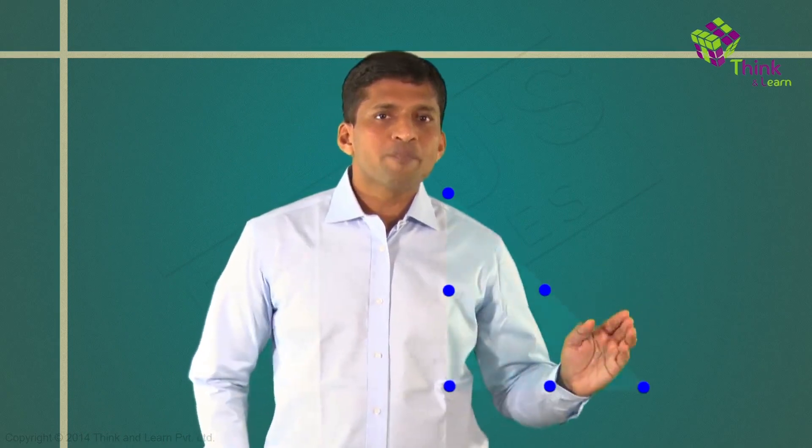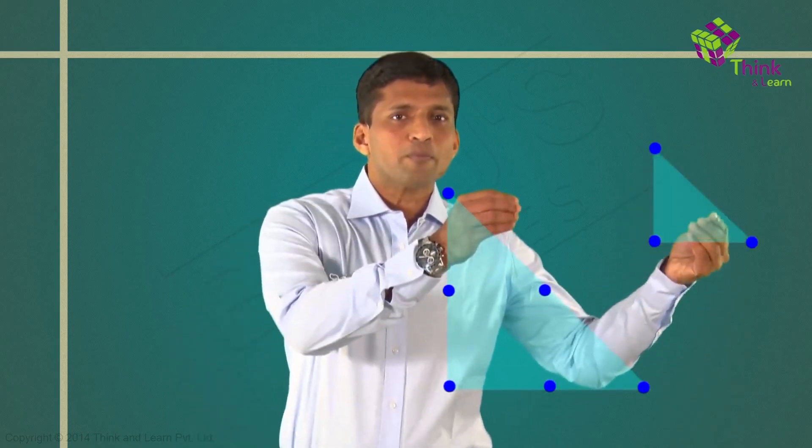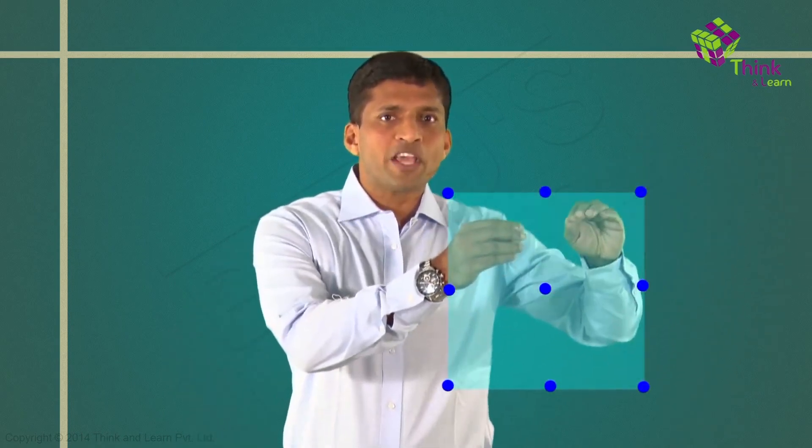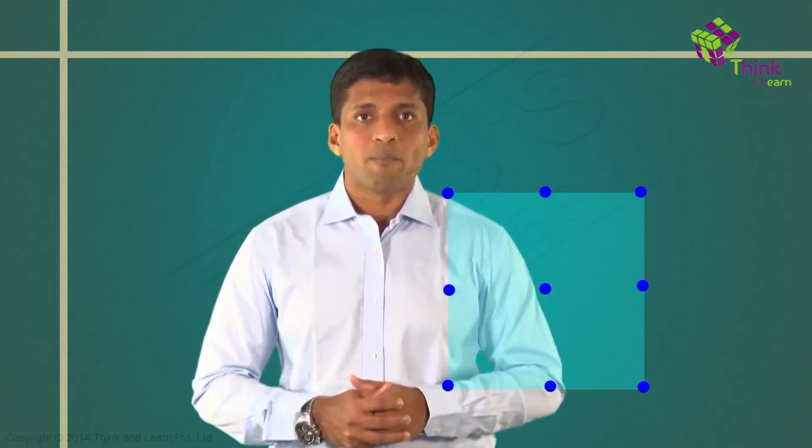Let's visualize the addition of two triangular numbers. If I take the triangular number 6 — arranged in rows 1, 2, 3 — and the previous triangular number 3, flip it upside down and place it alongside, I get 3+3+3, which is 9. So 9 is 3 plus 6, and 9 is a square number. So geometry is nothing but number patterns visualized.